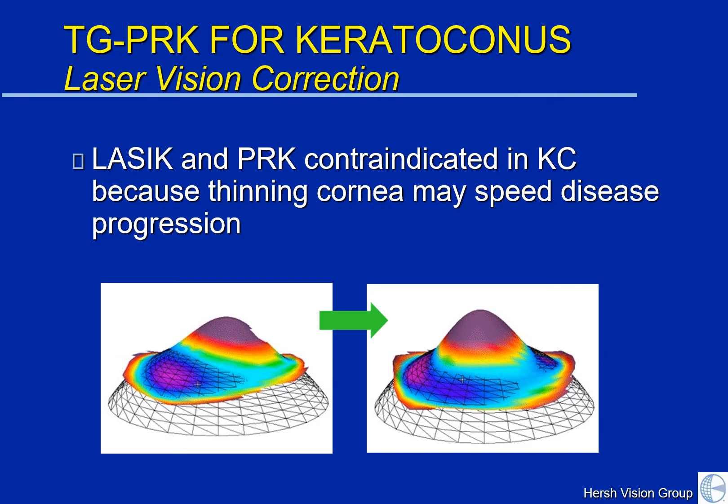Importantly, though, laser vision correction — that is LASIK and PRK — are contraindicated in keratoconus. This is because removing additional tissue in the keratoconic cornea may speed disease progression. Indeed, many patients that we see were first diagnosed with keratoconus when they went in for a LASIK consultation, and their corneal topography map showed an irregularity.